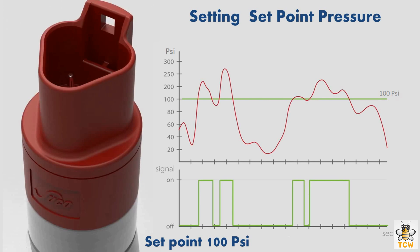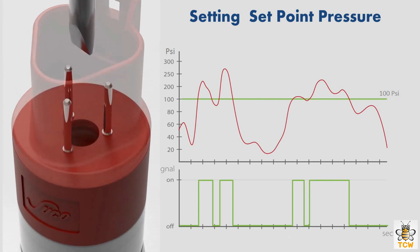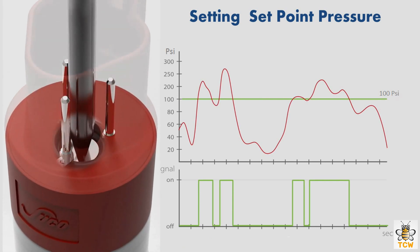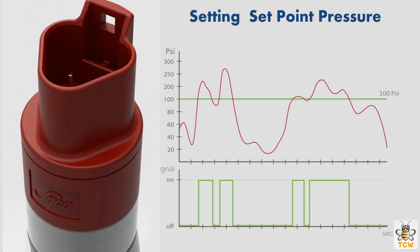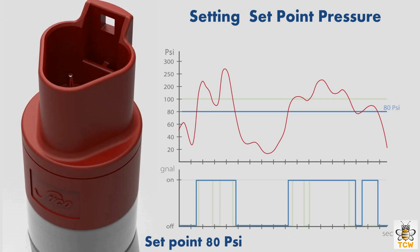On the right is the output signal chart of the pressure switch with a set point of 100 psi. We can see from the chart that the pressure switch signal is on if the pressure is above 100 psi. To change the set point pressure, turn the regulating screw until it reaches the new set point pressure. The new set point pressure is 80 psi, and we can see the change in the output signal chart — the pressure switch signal is now on if the pressure is above 80 psi.